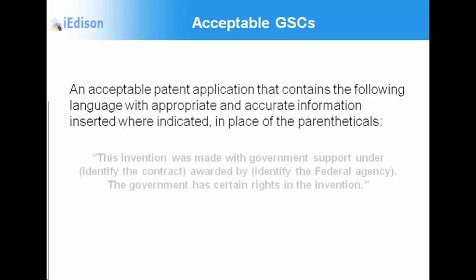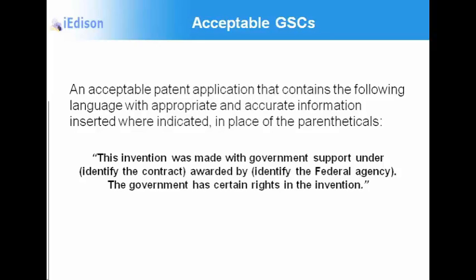Acceptable government support clauses must contain the following language with accurate information inserted in place of the parentheticals: 'This invention was made with government support under [identify the grant or contract], awarded by [identify the federal agency — NIH in this case]. The government has certain rights in the invention.' Again, this is a fill-in-the-blank exercise. Remember the quotation marks surrounding the clause — there's no wiggle room. Adding conditional words such as 'may,' 'might,' 'could have,' 'may have been,' 'in part,' or 'a few' are unacceptable. Don't be creative. This is the language that's required for the government support clause.